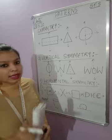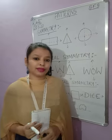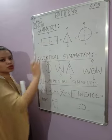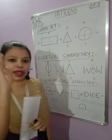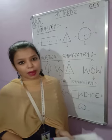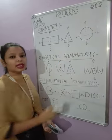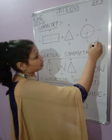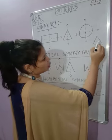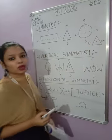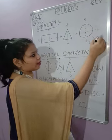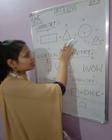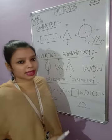Some objects may have more than one line of symmetry. For example, a rectangle has two lines of symmetry — you can divide it this way or that way and get equal parts. But for a triangle, there is only one line of symmetry. If I divide the triangle horizontally, we do not get equal parts, so it does not have a horizontal line of symmetry — only a vertical one.